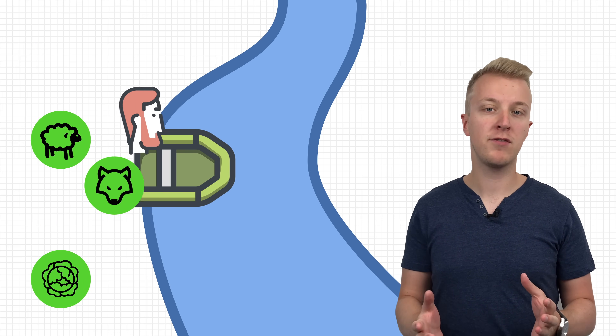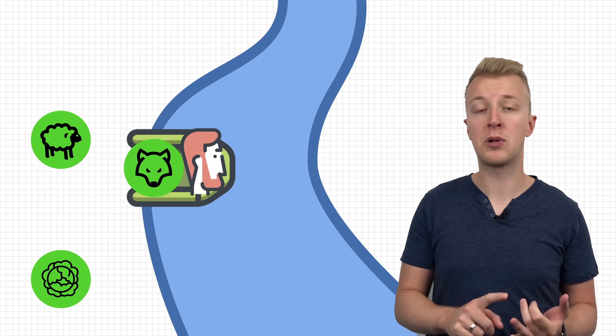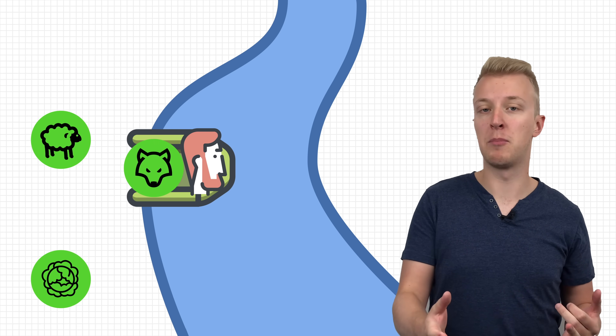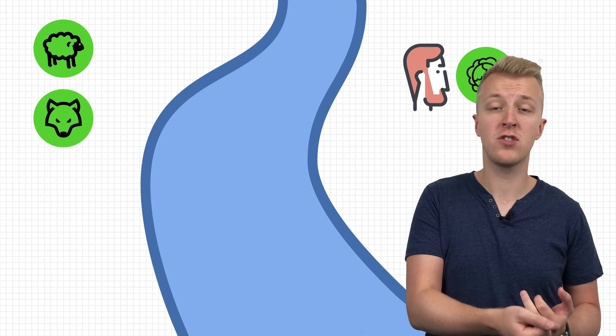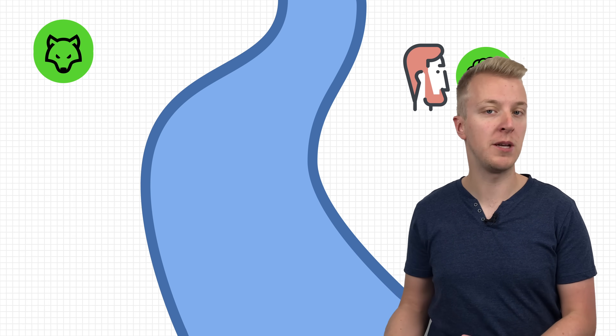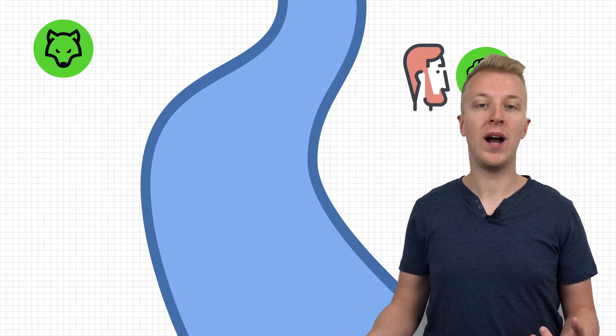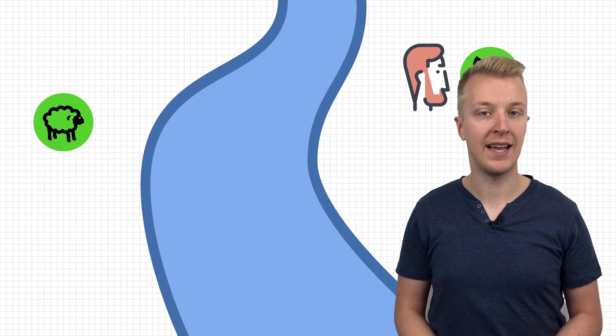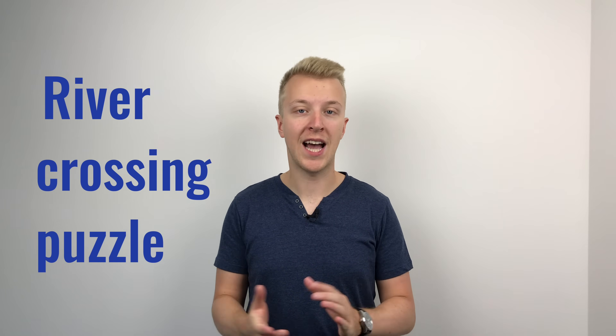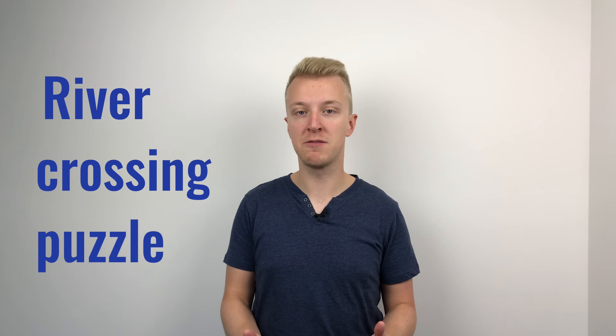However, there's a catch. The boat is only big enough to carry you plus one other item. And to complicate matters even further, you can't leave the wolf alone with the sheep because the wolf will eat the sheep. Likewise, the sheep will eat the cabbage if you leave them unattended. This is called a river crossing puzzle, a type of transportation puzzle, and it's a relatively simple one.